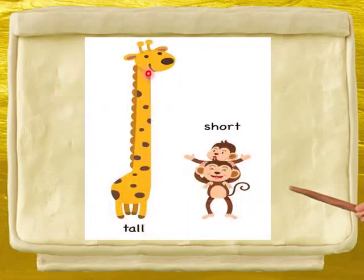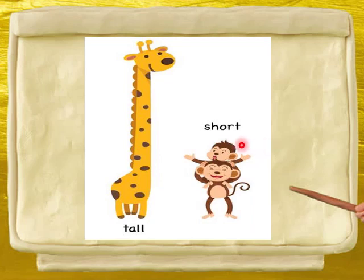यह giraffe तो कितना tall है. और यह two monkeys मिलकर भी इसकी height को नहीं ले पा रहे हैं, तो यह क्या है? Short. Tall और यह है short. Tall का opposite — short.